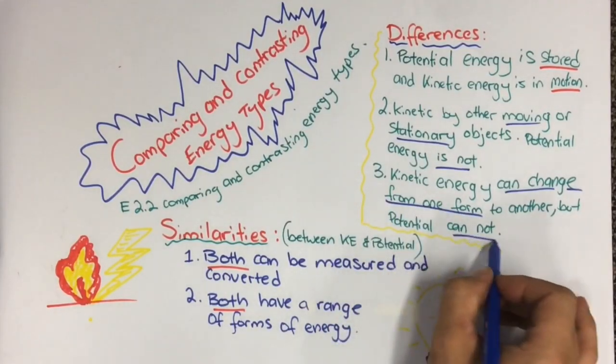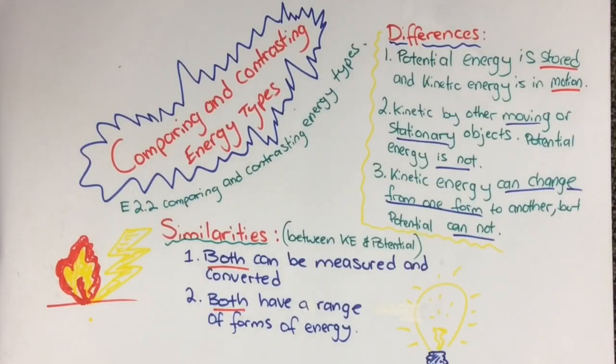So summing it up, kinetic energy and potential energy share a range of similarities and differences. These help us to classify forms of energy into each category.